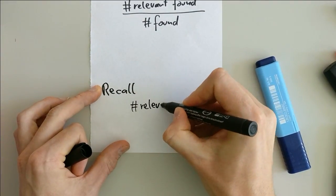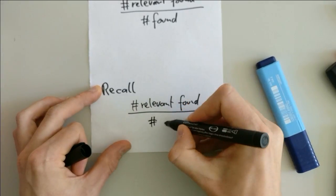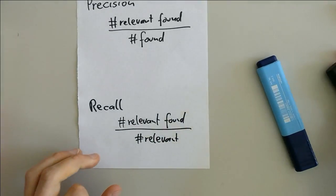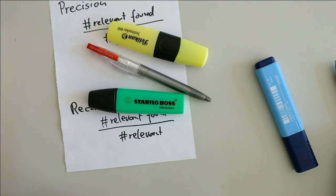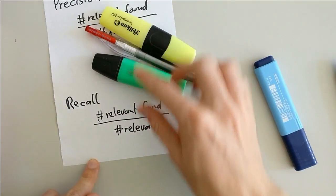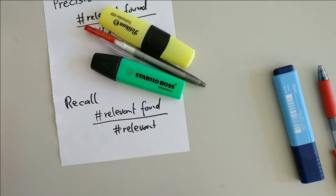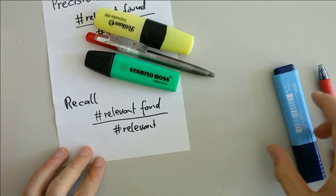The recall is the number of relevant items you find divided by the number of relevant items in total. So if you for example find these three items here, the number of relevant items which were found are two, two text markers, but this one text marker is missing. So in total there are three relevant items. Recall is two divided by three, so two thirds.